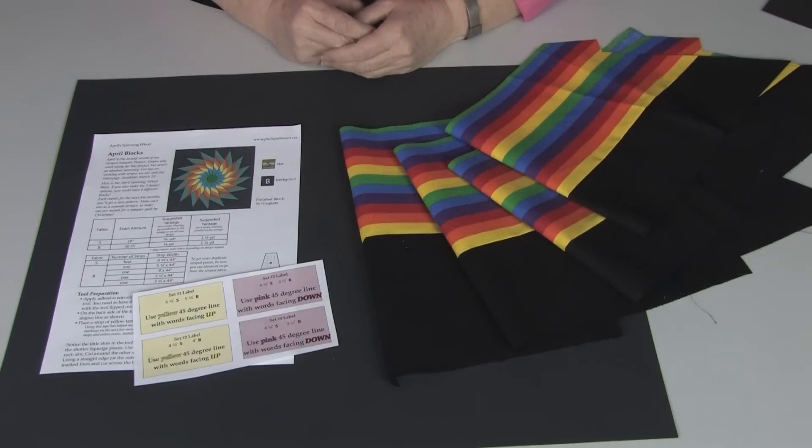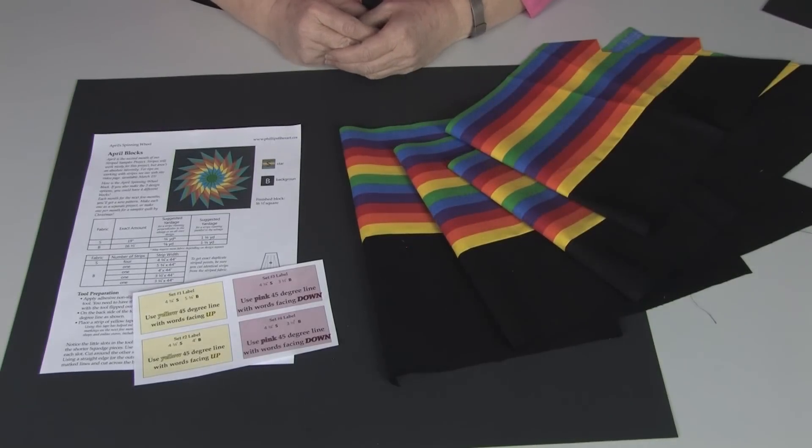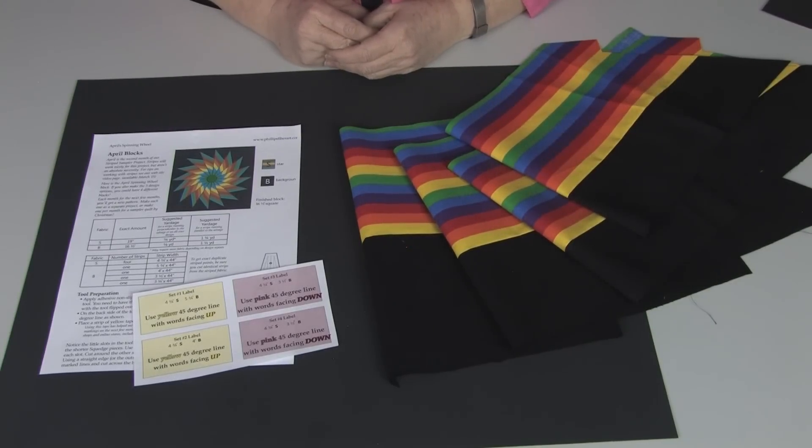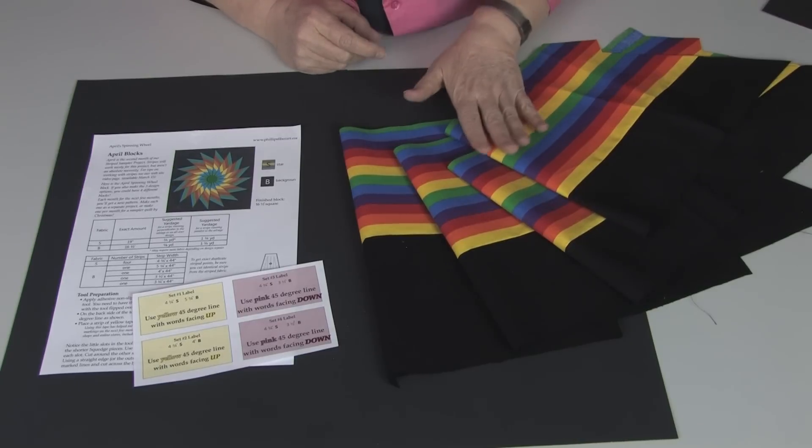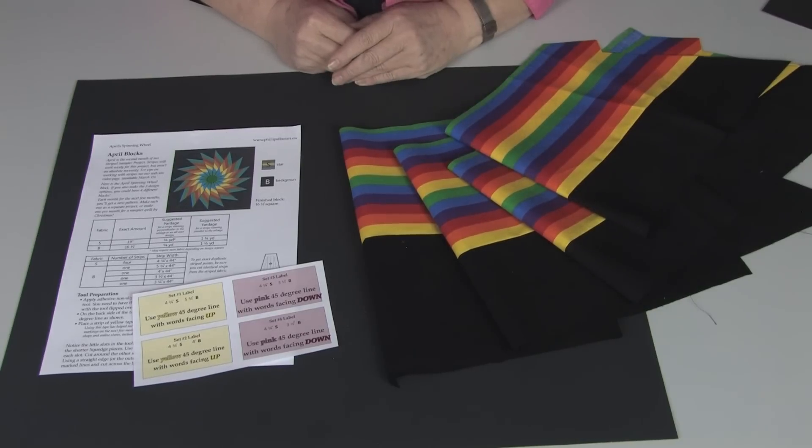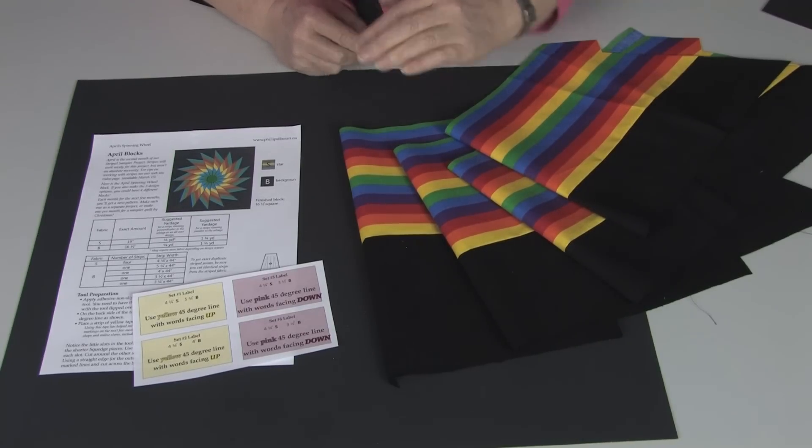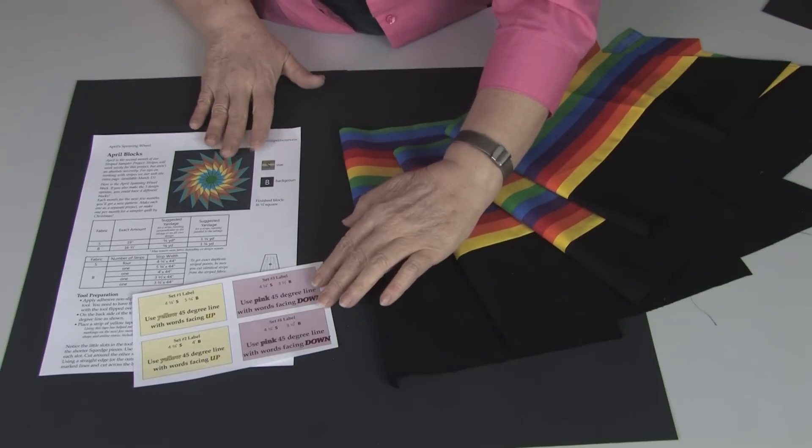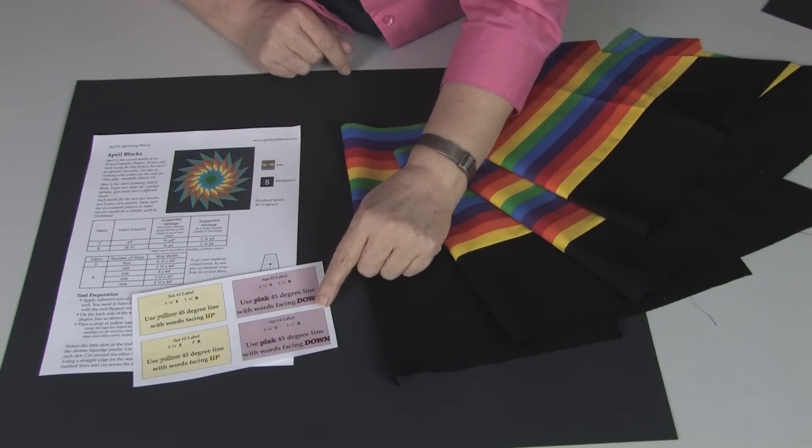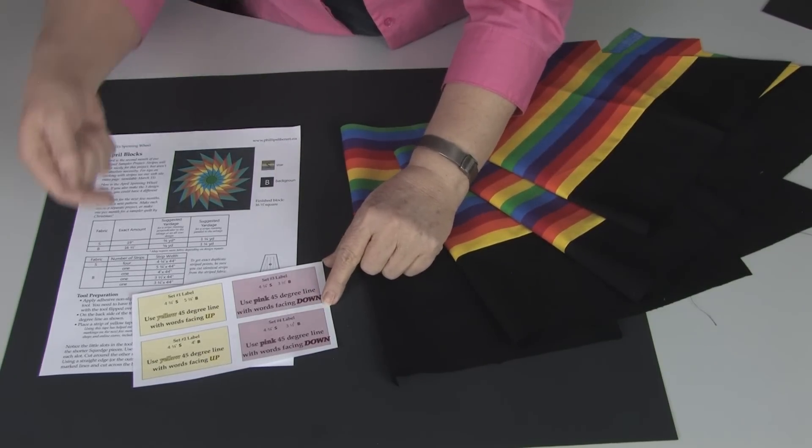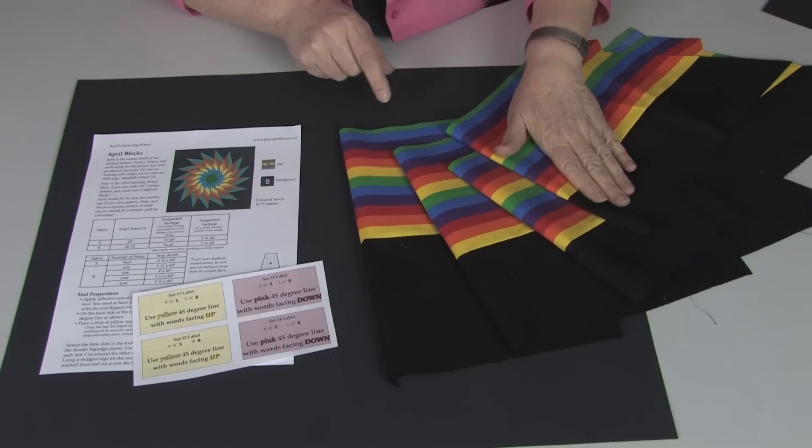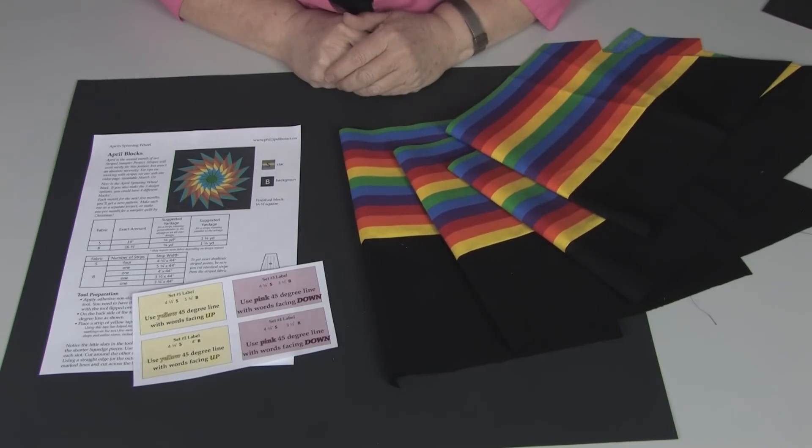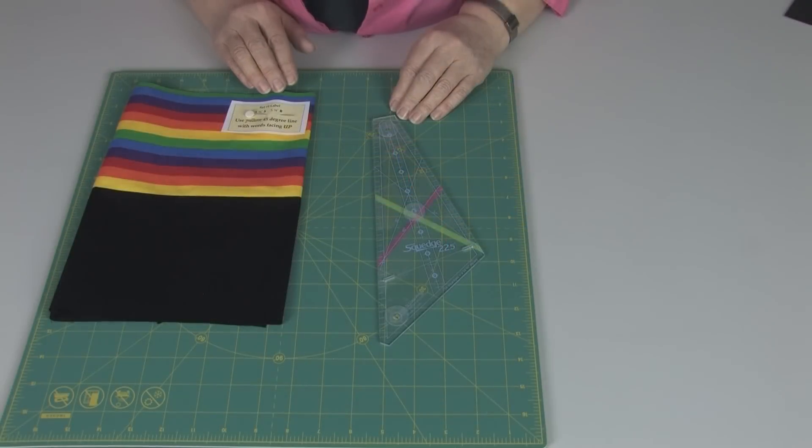The next thing we're going to do is sew our background strips to those striped strips. We get those sewn together. But before we're ready to cut, here's an important step. In your instructions, you have labels. Make use of these. They're color-coordinated. And you'll want to pin one to each of your strip sets to keep everything straight.